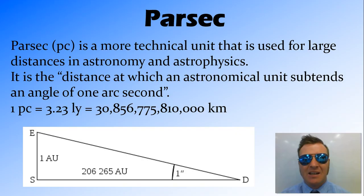Another unit that we have, and it's more of a technical unit. It's used by astronomers in astrophysics and stuff like that. And it's called parsecs. Now it's defined as the distance at which an astronomical unit subtends an angle of one arc second. Which is complicated.